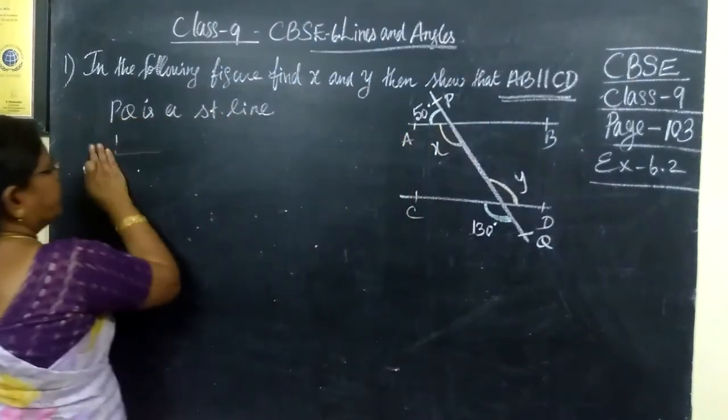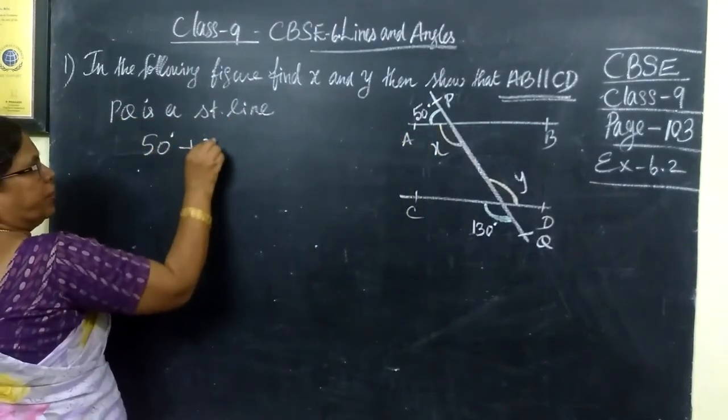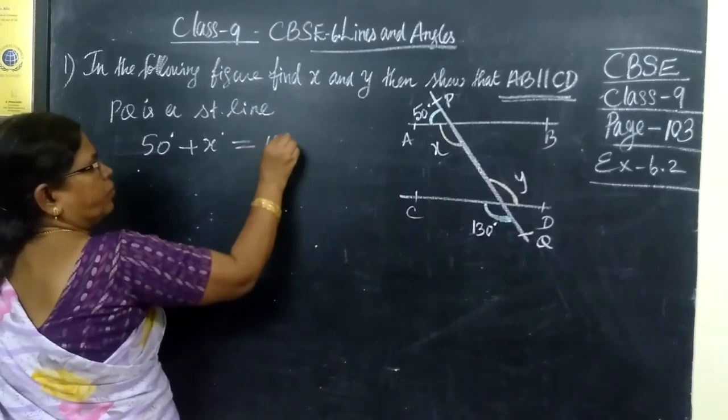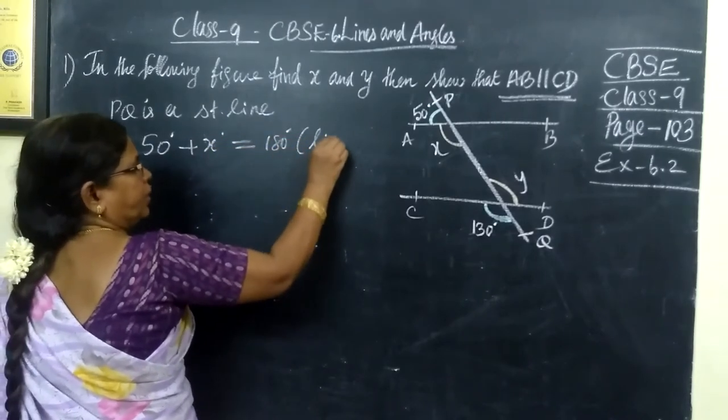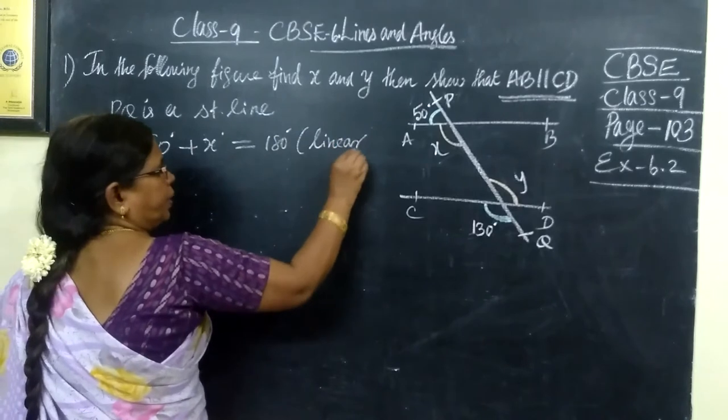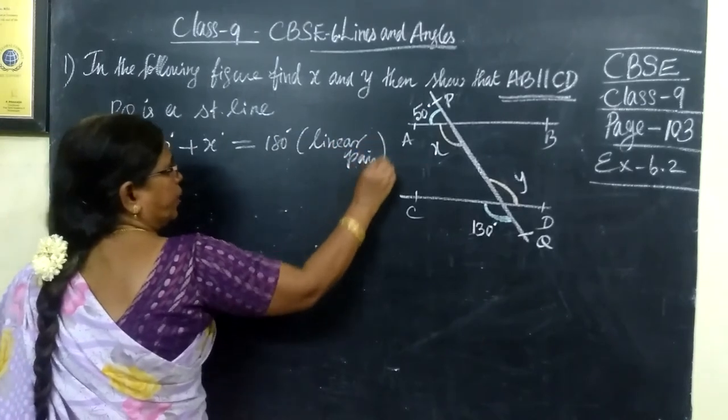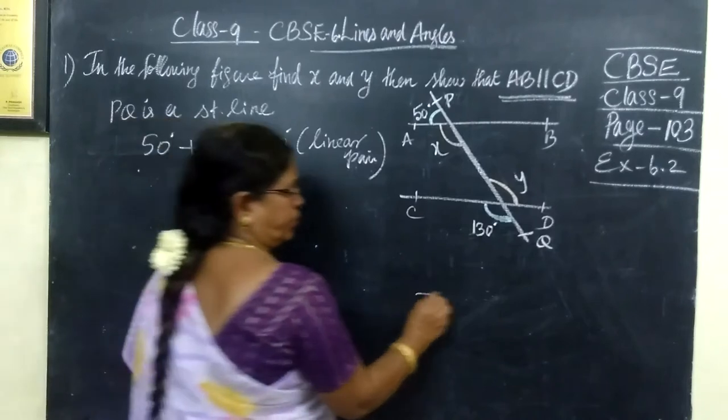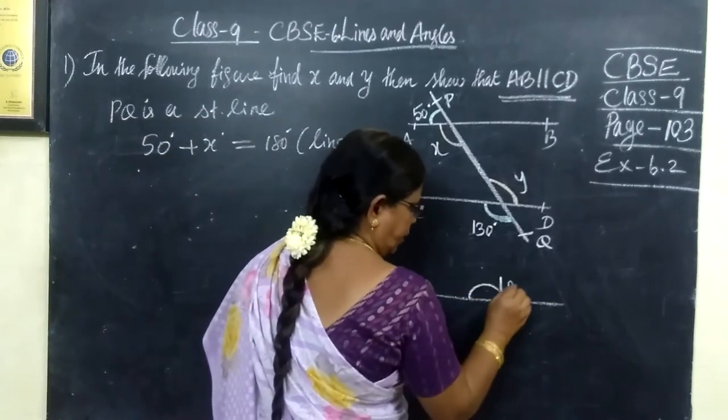50 degree plus X degree equal to 180 degree. Linear pair. Linear pair means if the sum of the angle is equal to 180 degree. We know angle in a straight line, it is 180 degree.